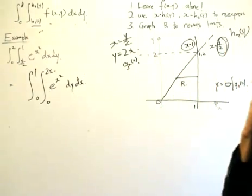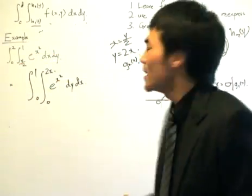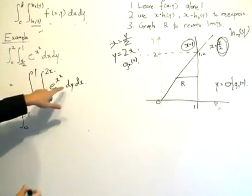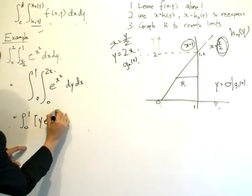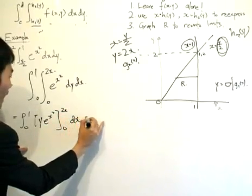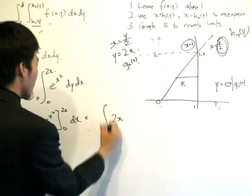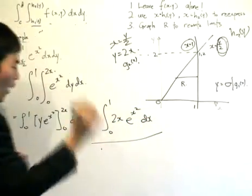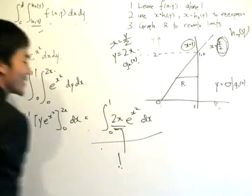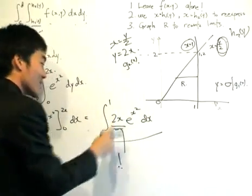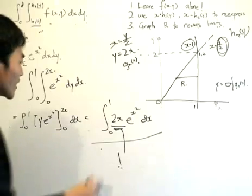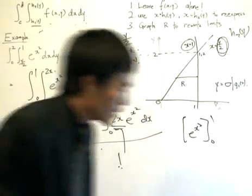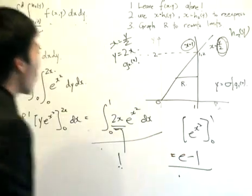Some of you might be tempted to immediately substitute the limits, but we should graph region R to see what's going on. So we have: integrate from 0 to 1, and the inner integral gives Y times E to the X squared evaluated from 0 to 2X, which gives 2X times E to the X squared, then integrate with respect to X. This 2X is very important — when we differentiate X squared we get 2X, so we use the standard form and get E to the X squared evaluated from 0 to 1, which equals E minus 1.